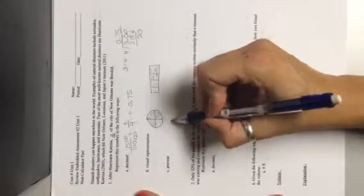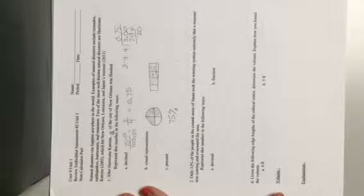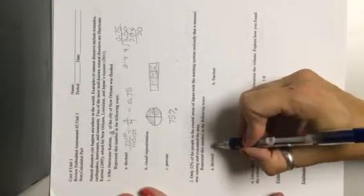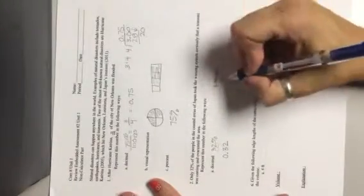You could also do just about anything that you can think of as long as there's three-fourths shaded in. Okay, percent. I'm gonna go back to my decimal and I'm gonna move the decimal place over two spots to give myself seventy-five percent. Okay, so number two says only 32% of the people in the coastal areas of Japan took the warning system seriously that the tsunami was coming and evacuated the area. Represent this number in the following ways. First as a decimal.